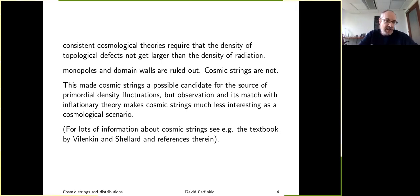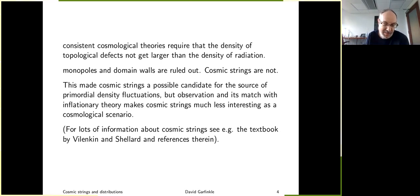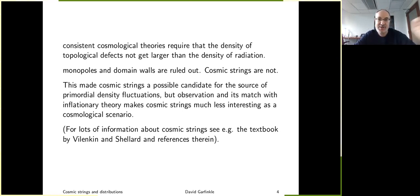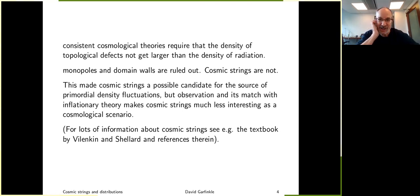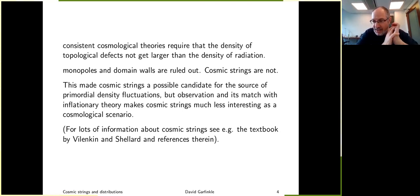One of the early motivations for cosmological inflation is that many theories predicted the existence of monopoles, which was inconsistent with observation. Inflation was invoked so that monopoles formed before inflation would be diluted by the exponential expansion. In principle you can form any of these topological defects, but if they threaten to destroy radiation domination you need to form them before inflation and inflate them away.